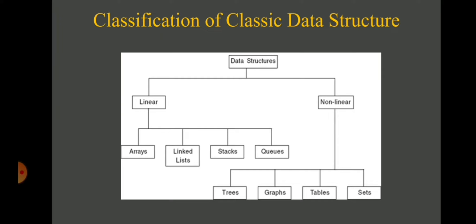In case of linear data structures, all the elements form a sequence or maintain a linear ordering. On the other hand, in case of non-linear data structures, there is no such sequence among elements. Rather, all the elements are distributed over a plane.